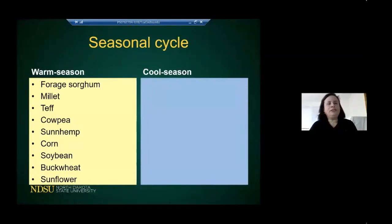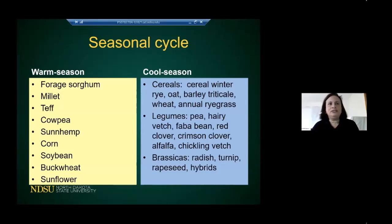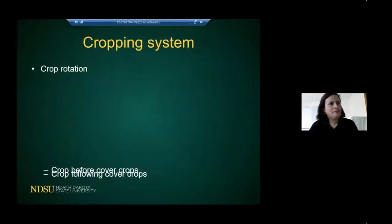Seasonal cycle is very important because it determines when you can plant these crops. Warm season crops — forage sorghum, millet, teff, cowpea — require warmer temperatures and freeze as soon as temperatures reach 32°F in the fall. Cool season crops include cereals, many legumes, and all brassicas. I don't know of any warm season brassica, so it's important to know these to fit them into your cropping system.